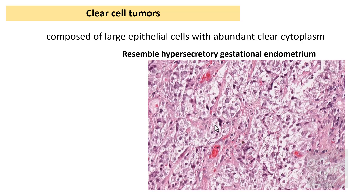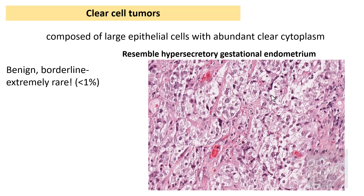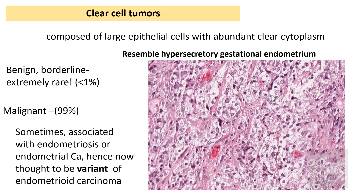The next important epithelial tumor is the clear cell tumor. As the name suggests, these are composed of very large epithelial cells with abundant clear cytoplasm, resembling hypersecretory gestational endometrium — large polygonal cells with a centrally placed nucleus and abundant clear cytoplasm. Just like endometrioid tumors, benign and borderline clear cell tumors are extremely rare. 99 percent of clear cell tumors are clear cell carcinomas, and they are also associated with endometriosis or endometrial carcinoma. For this reason, clear cell tumors are now considered a variant of endometrioid carcinoma rather than a separate entity.